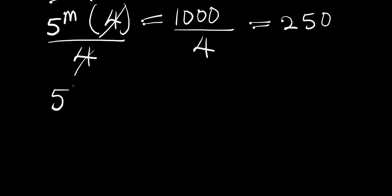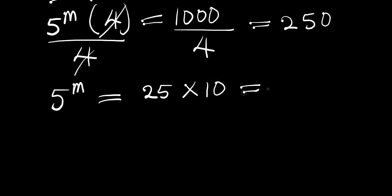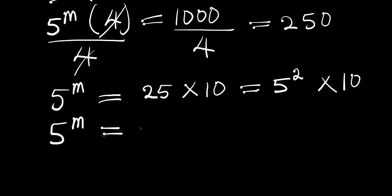So you have 5 raised to the power of m equals 250. We can write 250 as 25 times 10, and since 25 is a perfect square, we write it as 5 power 2 times 10. So we have 5^m equals 5² times 10.